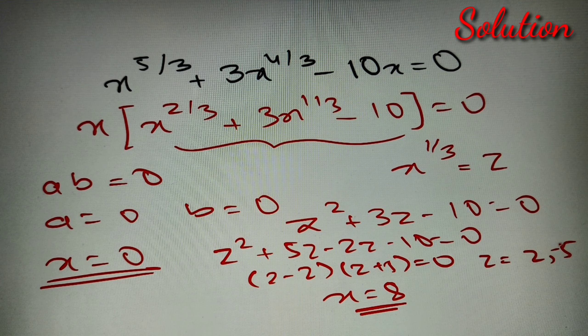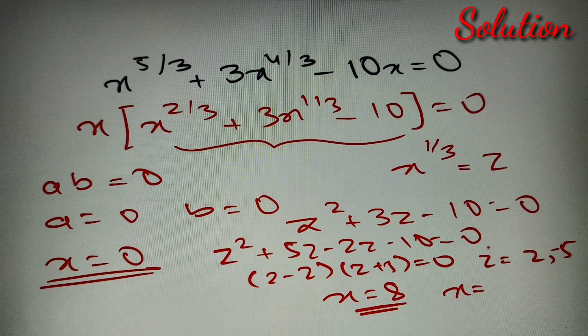Now when z = -5, it implies that x^(1/3) = -5. So the value of x equals (-5)³, that is equal to -125.